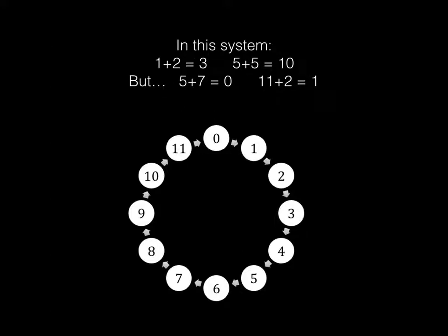So in the system, 1 plus 2 is 3, and 5 plus 5 is 10, but 5 plus 7 is zero, because after you get to 11, you go back to zero. 11 plus 2 is 1, because after 11 is 0, and then 1 after that is 1.